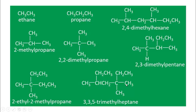Now follow here. The longest chain has 7 carbons — this is heptane. Numbering: from this side, the third carbon is where substitution starts; from the other side, also the third carbon. But from this side, at the third carbon there is only one substitution, while from the other side, at the third carbon there are two substitutions. So numbering starts from the side with more substitutions. The name is 3,3,5-trimethylheptane. The longest chain will be heptane with 3,3,5-trimethyl.